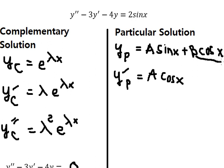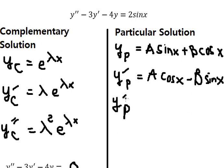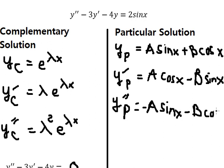The derivative of cos x gives negative sin x. Then we do the second derivative of yp. We get negative A sin x and negative B cos x.